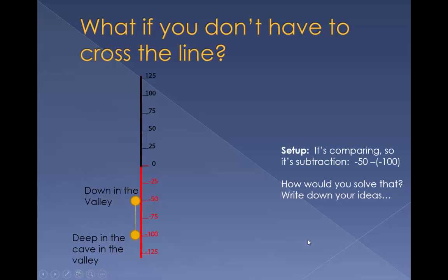For the setup, it's comparing, it's still subtraction. Negative 50 minus negative 100. How would you solve that? Write down your ideas.